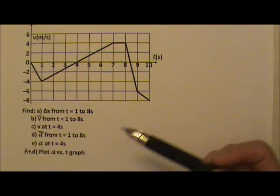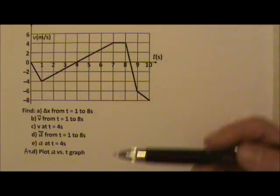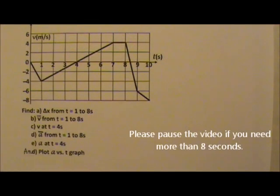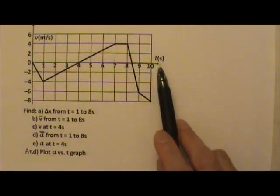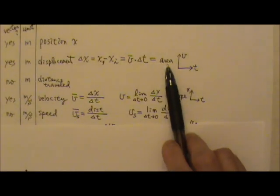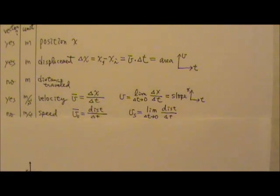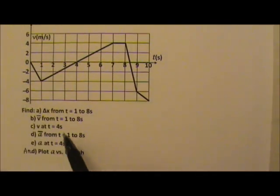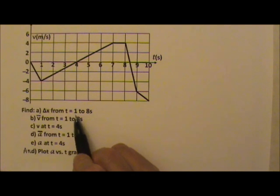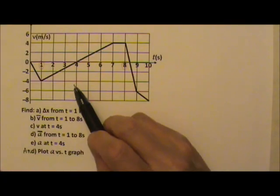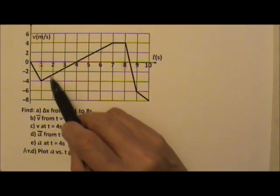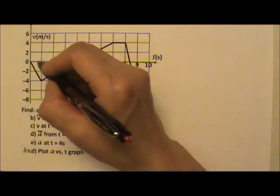To find the displacement from a velocity versus time graph, you will need the area — the area of the graph between the graph line and the zero line. We want the displacement from t equals 1 to 8.